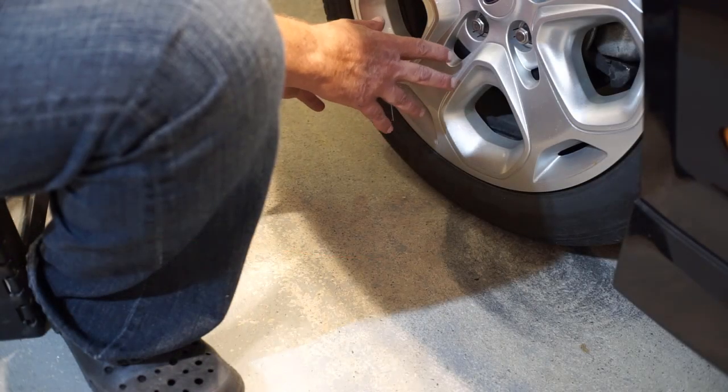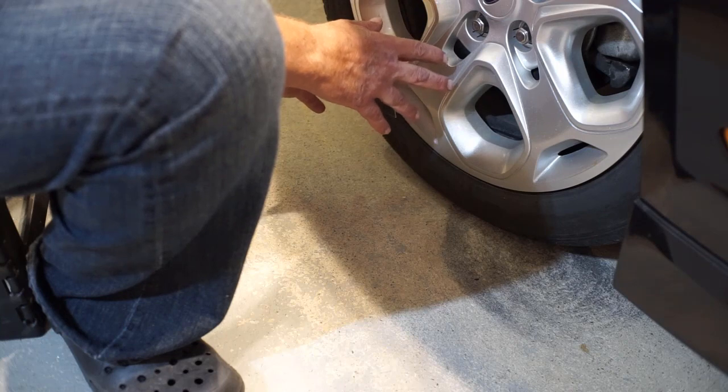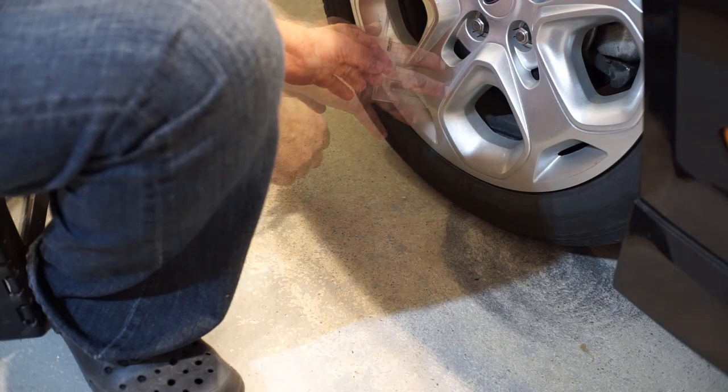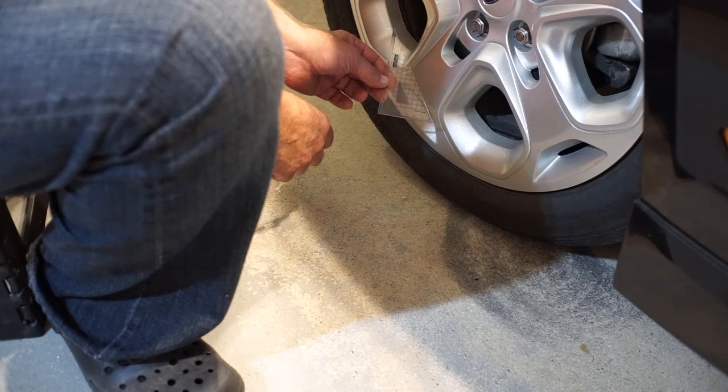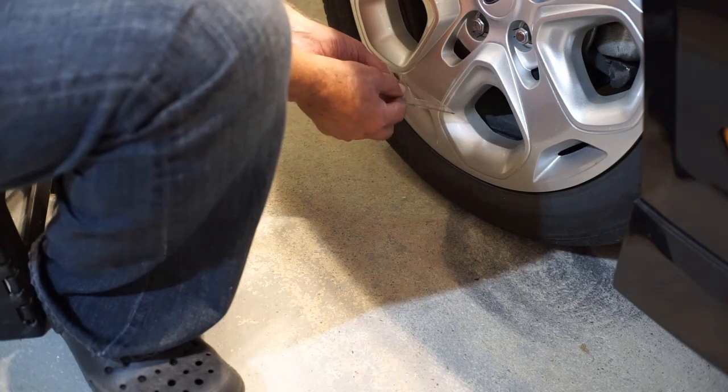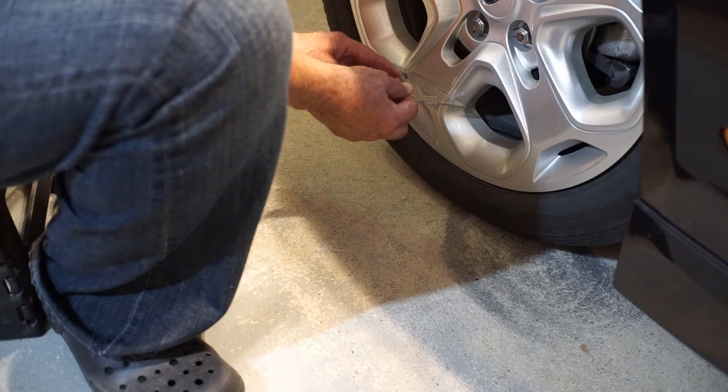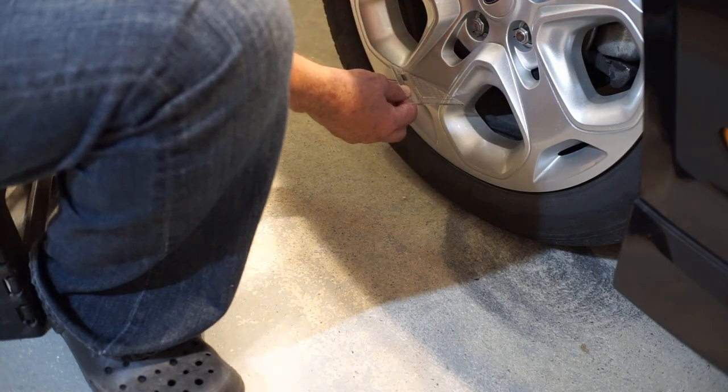For this method, we're going to be steering the wheel 30 degrees each way off center. I'm using a simple 30-degree triangle from a geometry set, and I'm just visually aligning this side to the body of the vehicle.